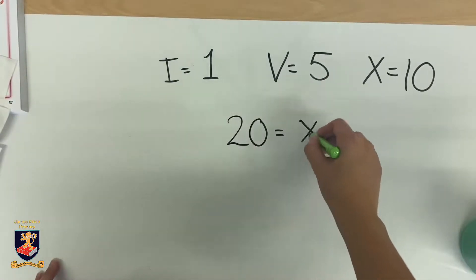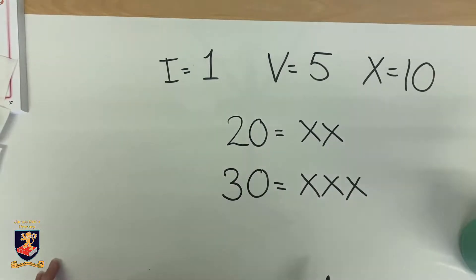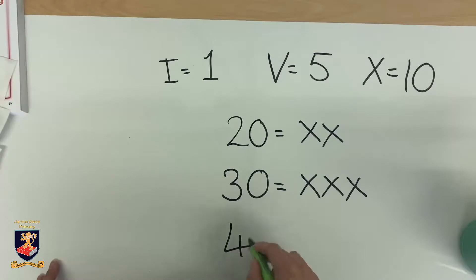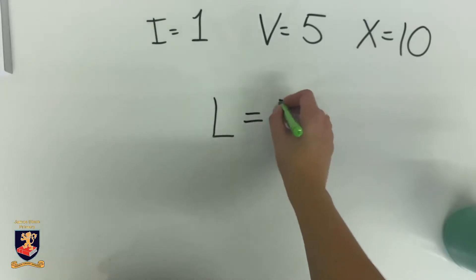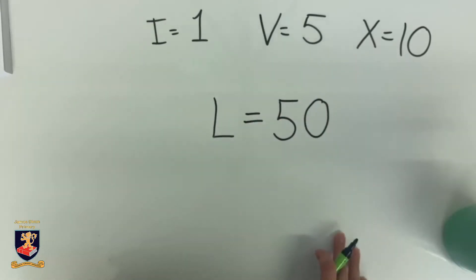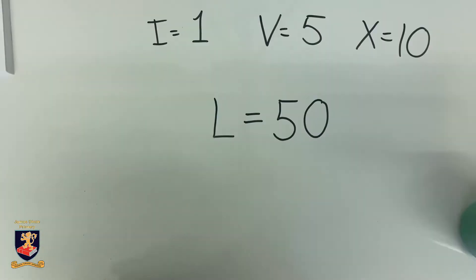So what about multiples of ten? Twenty is XX, thirty is XXX, forty... hmm, well, let's have a look. A new Roman numeral: L equals fifty. So using that knowledge, forty is going to be ten less than fifty, or fifty subtract ten.